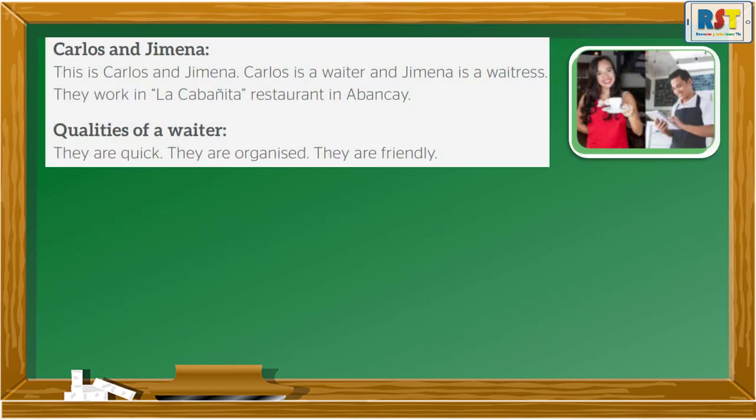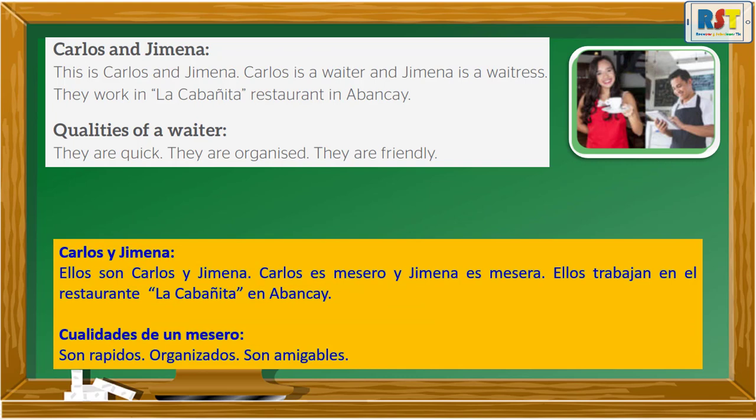Blog Entry 2. This is Carlos and Ximena. Carlos is a waiter and Ximena is a waitress. They work in the Cabanita restaurant in Abancay. Qualities of a waiter: They are quick, they are organized, they are friendly.